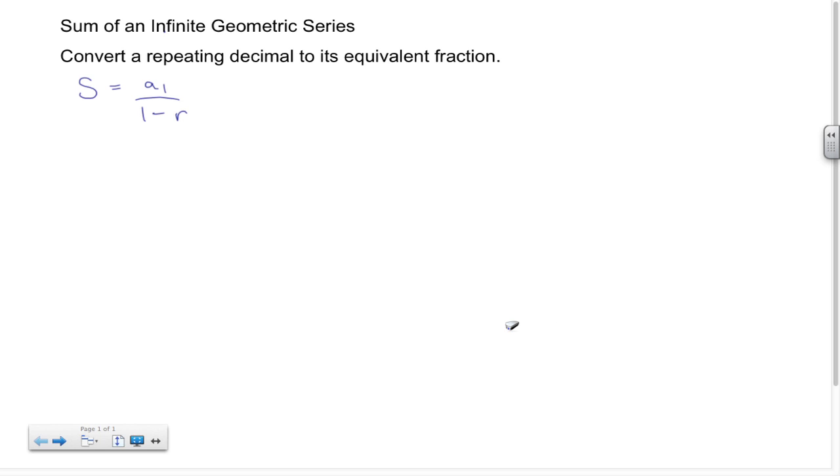...where S is the sum. Then here I have a sub 1, which is going to be the first term or the first number that you have to work with with the repeating decimal, and then 1 minus r, where r is what's known as the common ratio, and that's the value that you're multiplying each term by.